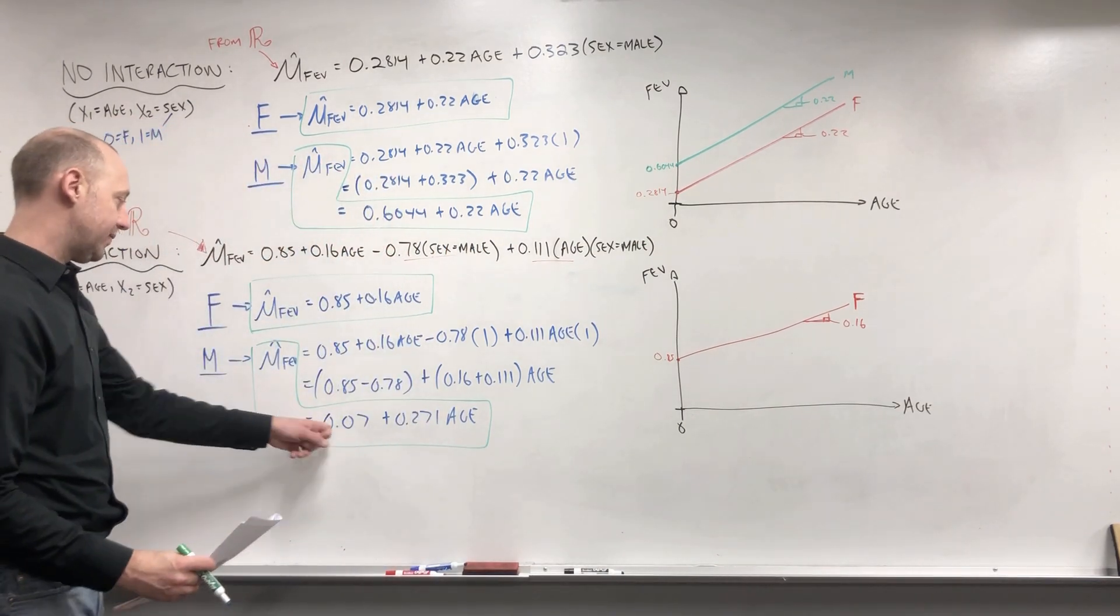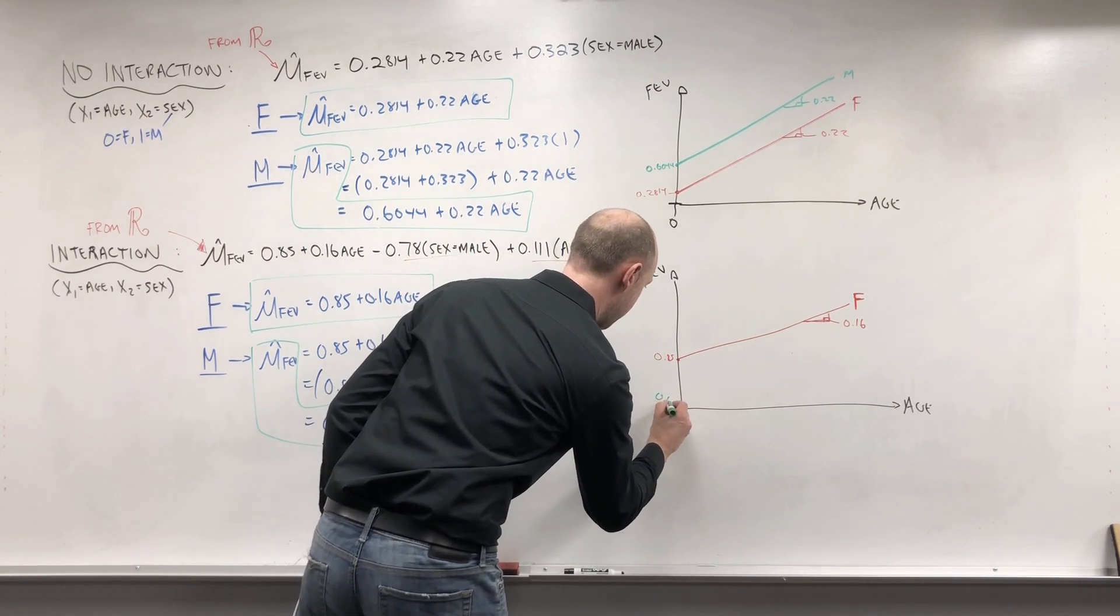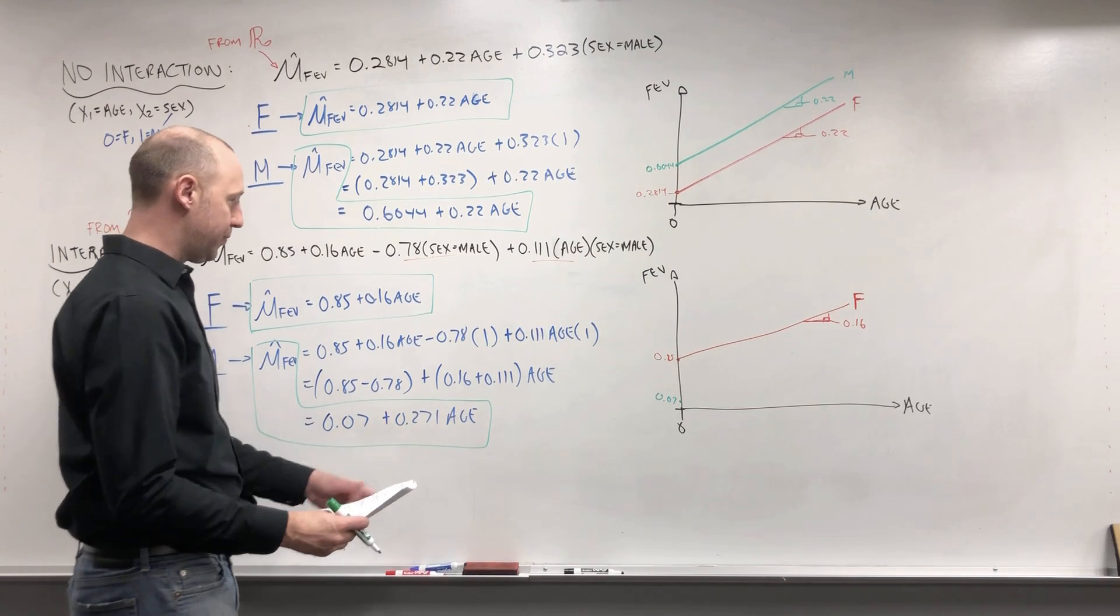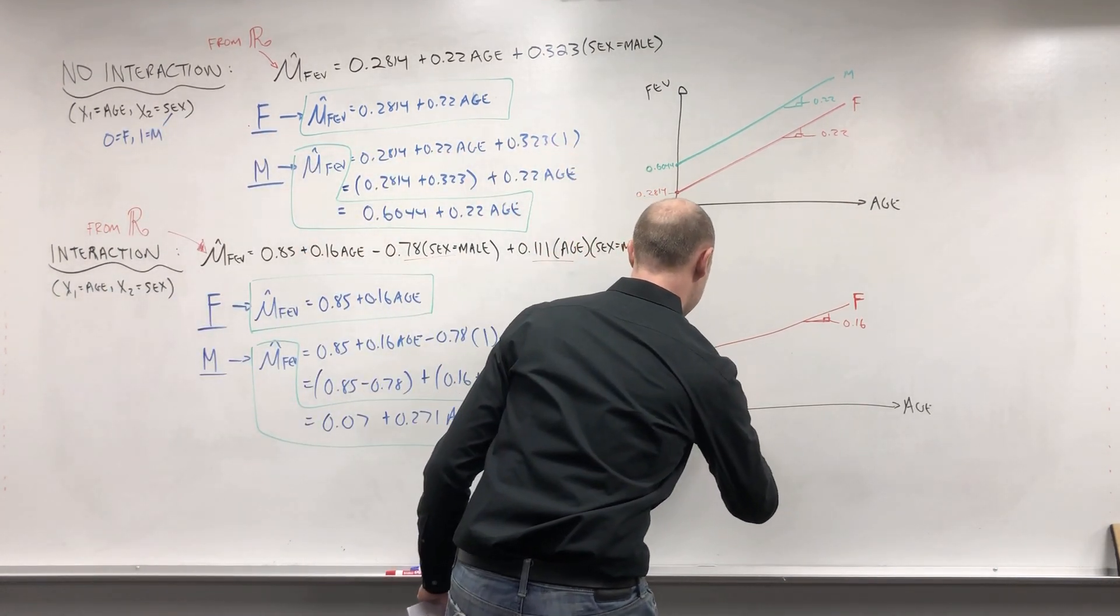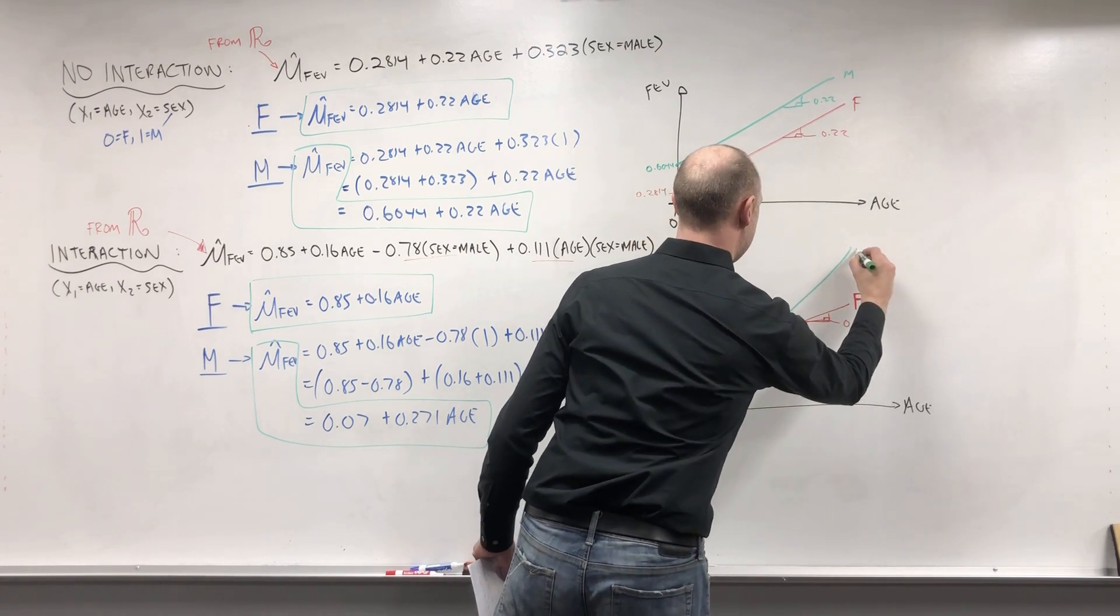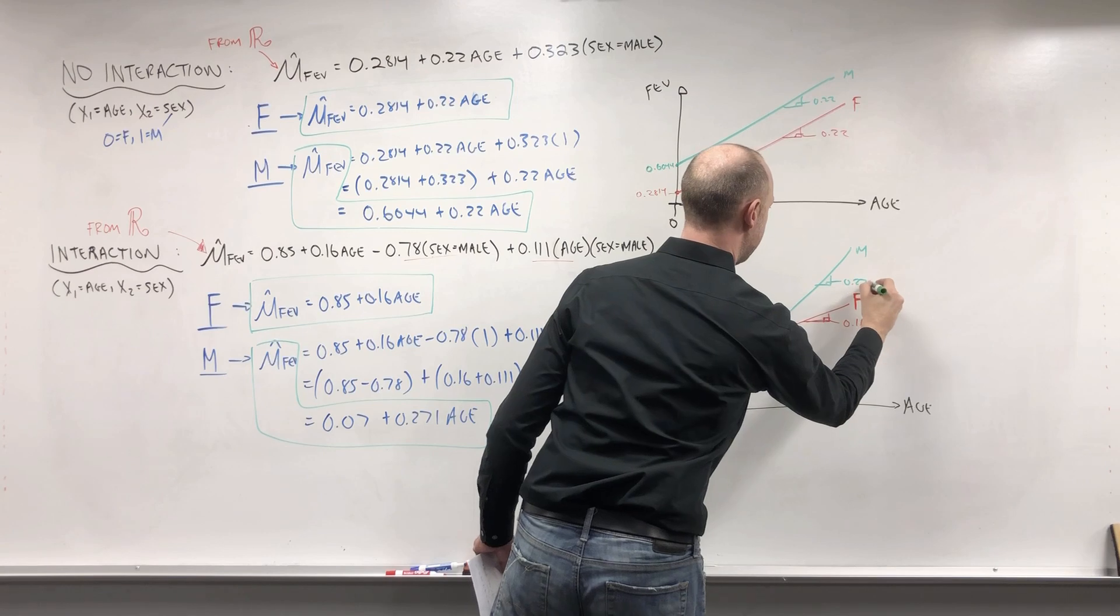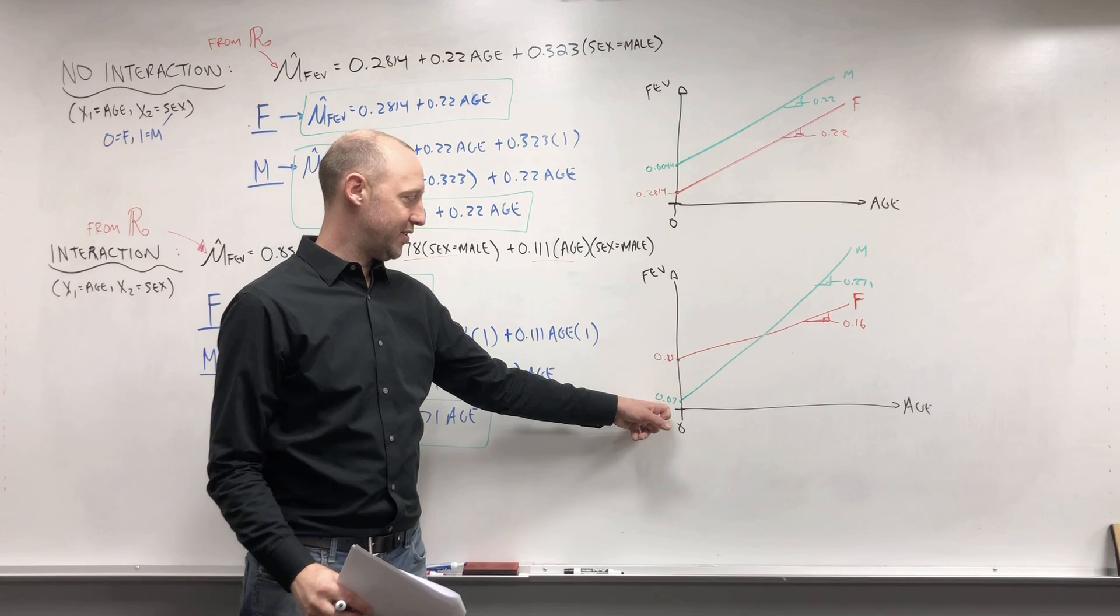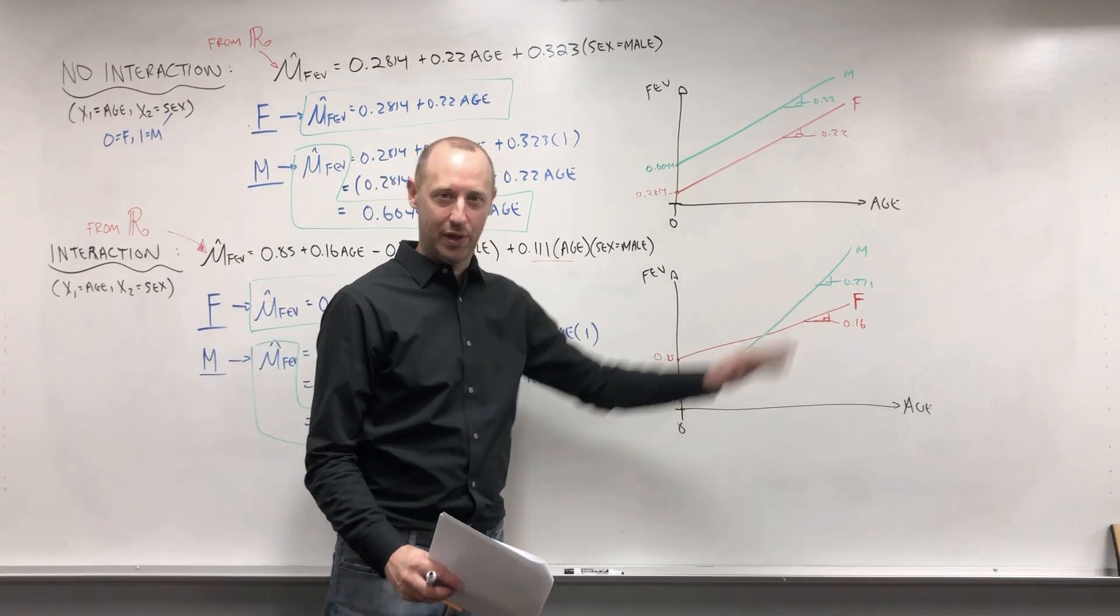If we're adding the line for males, the intercept is lower, it starts down here, 0.07, and the slope 0.271, and the slope 0.271. Okay, so a model like this would suggest that males tend to start off with lower FEV than females but increase at a quicker rate.